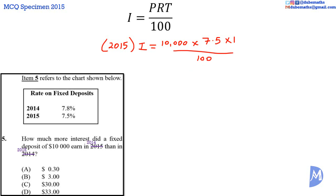Thus in 2015, the interest is equal to $10,000 multiplied by 7.5%, multiplied by 1, over 100. The interest earned in 2015 is equal to $750.